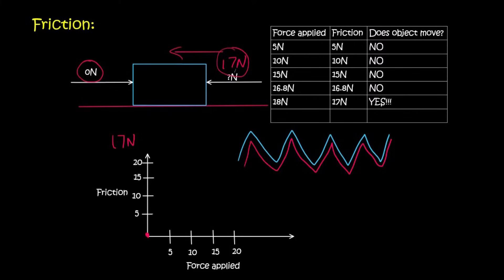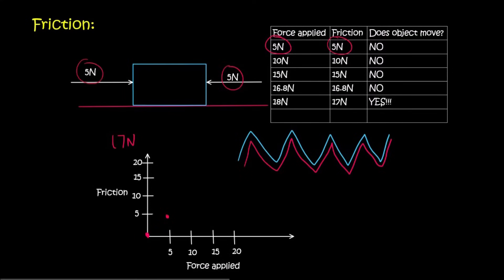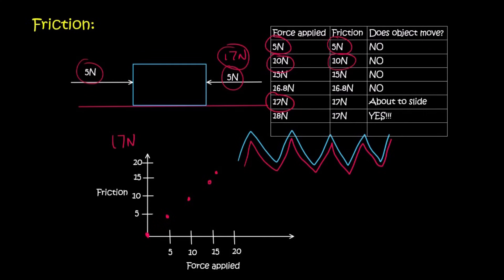Starting from 0 applied force gives 0 friction. Apply 5 newtons and friction is 5 newtons; 10 newtons gives 10 newtons of friction; 15 gives 15; 16.8 gives 16.8. Then at 17 newtons applied force, friction is also 17 newtons — it's at its absolute maximum, like it's giving up and the object is about to start sliding. The object can have a maximum of 17 newtons of friction, but it doesn't always have 17 newtons. Friction matches the applied force all the way up to 17.